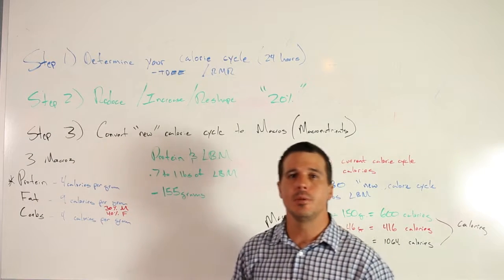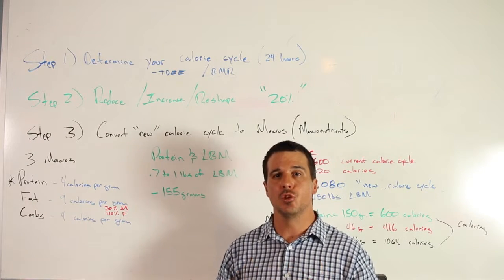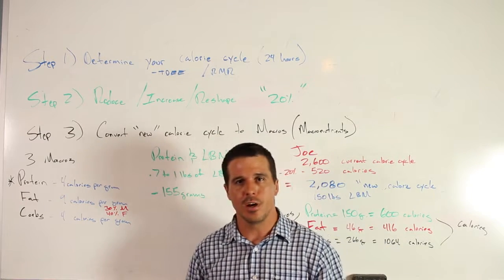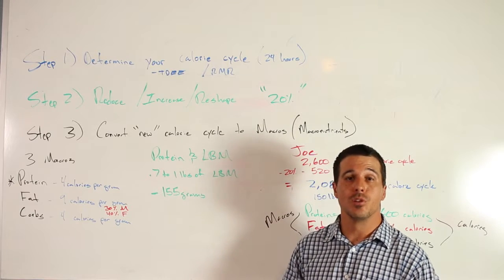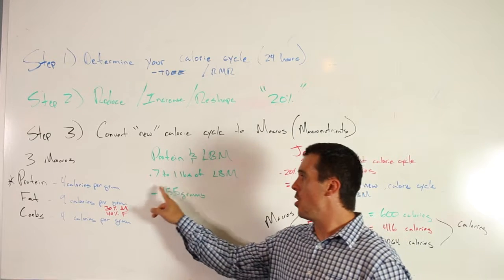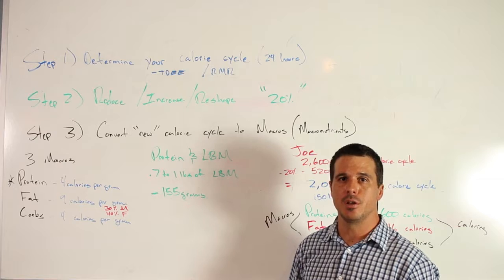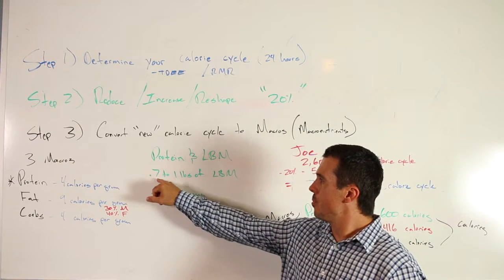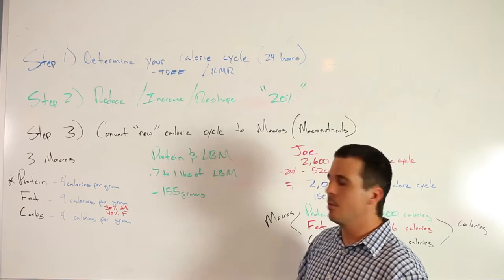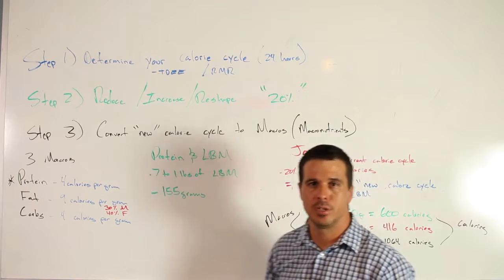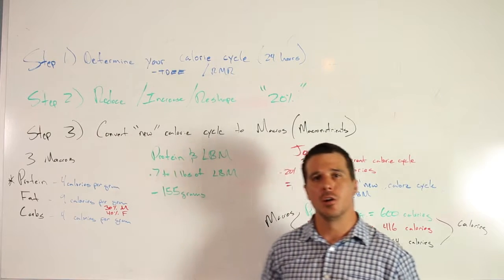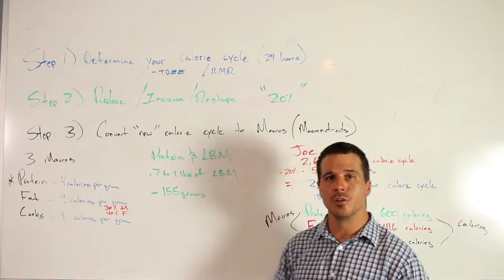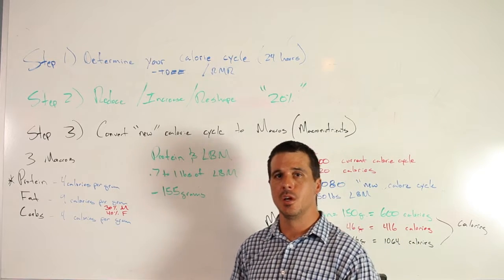Protein is always going to be your most important macro. Protein works hand in hand with your lean body mass. What is lean body mass? Lean body mass is if you had zero percent body fat, what would you weigh. For me, I'm currently at 175, but if I was zero percent body fat I would probably be about 155 to 150 pounds of lean body mass. You want to consume 0.7 to 1 pound of your lean body mass. If I'm 155 pounds of lean body mass, that's telling me I need to consume 155 grams of protein a day.